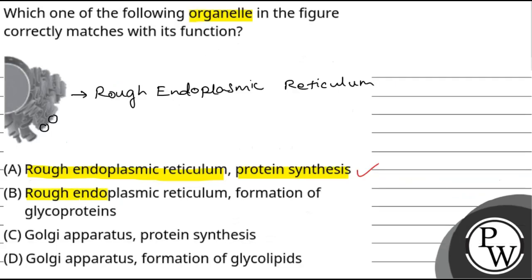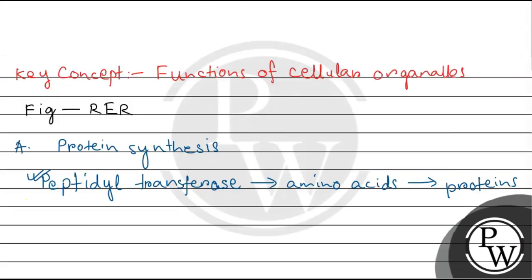Option B is rough endoplasmic reticulum and formation of glycoproteins. We have seen in option A that RER is a primary site of protein synthesis. In the formation of glycoproteins, the Golgi apparatus plays a major role.